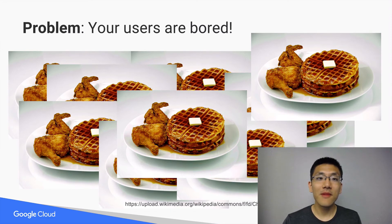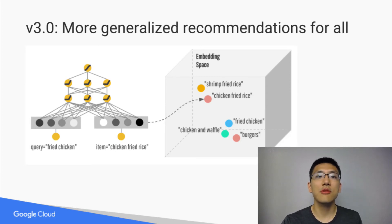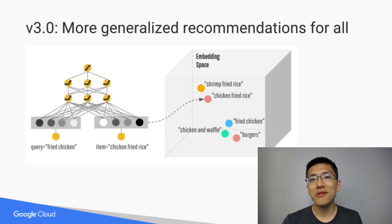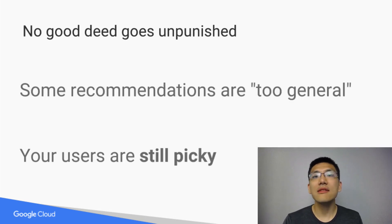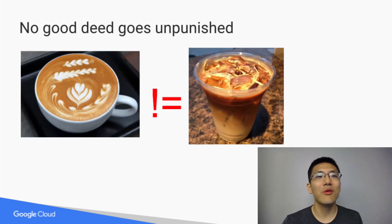So you go back to your machine learning tool belt and whip out deep learning. Deep learning allows data to be embedded into a space such that items which are similar are closer together in that space. This allows you to generalize items which are similar to one another, since they end up close together. So you implement your deep model and release your V3. But now, when your users ask for something like an iced decaf latte with non-fat milk, your app sometimes delivers them a hot latte with whole milk.